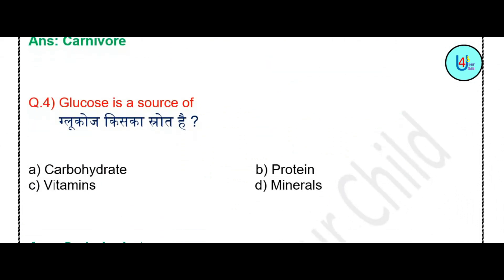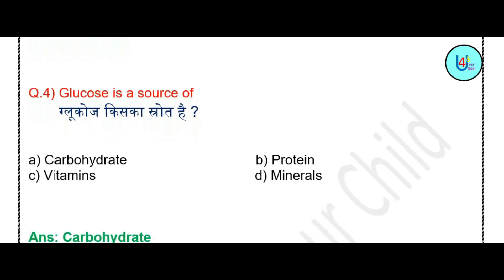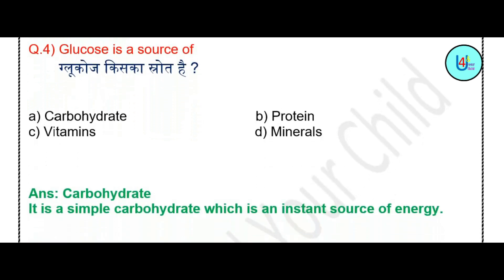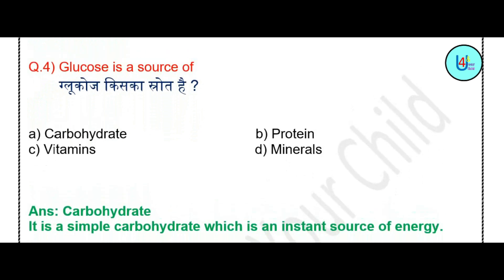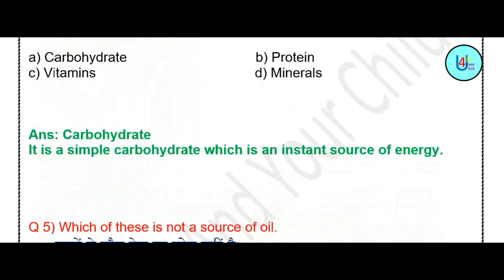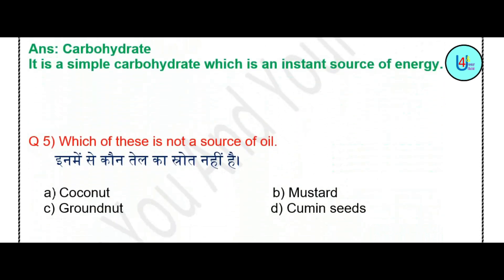Question number 4: Glucose is a source of — carbohydrate, protein, vitamins, or minerals? The correct answer is carbohydrate. This is a simple carbohydrate.